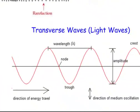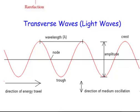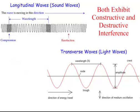Transverse waves are light waves. They move perpendicular to the surface and have wavelengths and frequencies. The speed of light is 3 times 10 to the 8 meters per second. Both light waves and sound waves exhibit constructive and destructive interference, and we can use velocity equals wavelength times frequency for both types of problems.